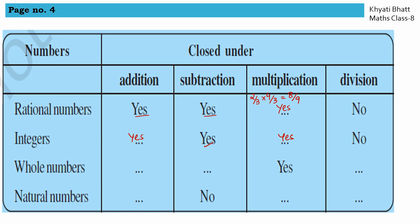For whole numbers: closed under addition — yes. Subtraction — no, because 2 minus 3 gives minus 1, which is not a whole number. Division — no, because 2 by 3 gives a fraction or decimal. For natural numbers: closed under addition — yes (1 plus 2, 2 plus 3 always give natural numbers). Multiplication — yes (2 times 3, 3 times 4 always give natural numbers). Division — no, because 2 by 3 does not give a natural number.